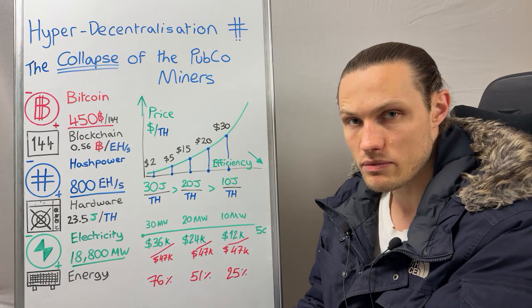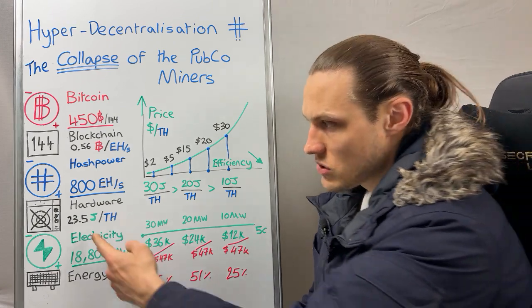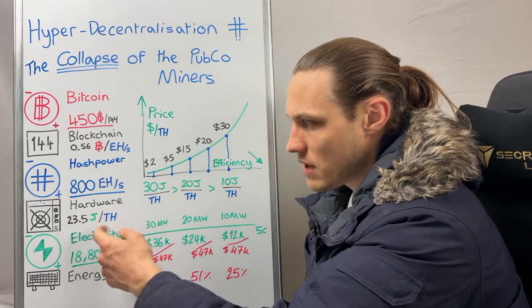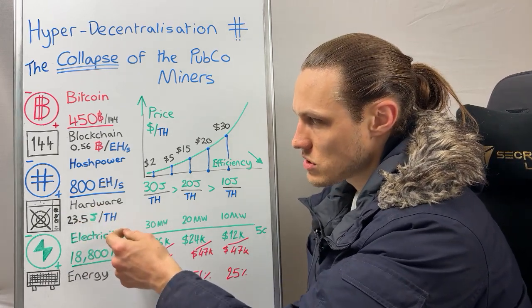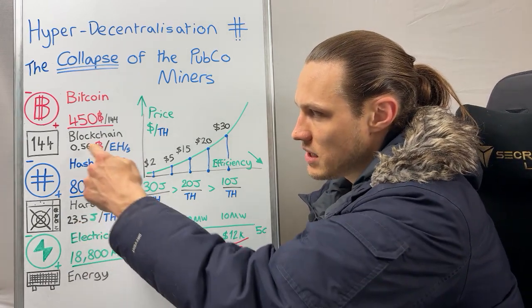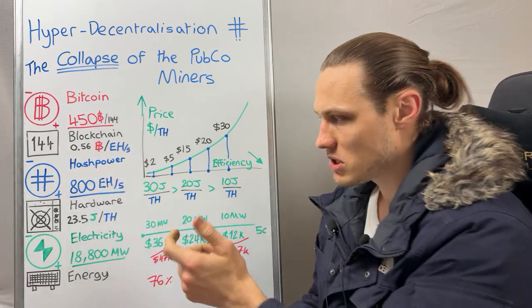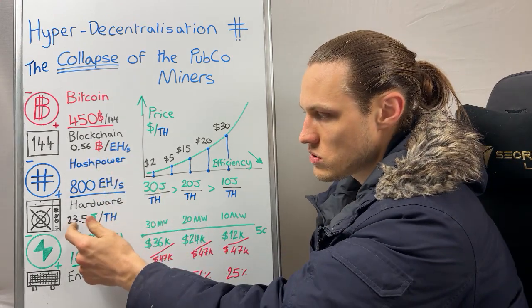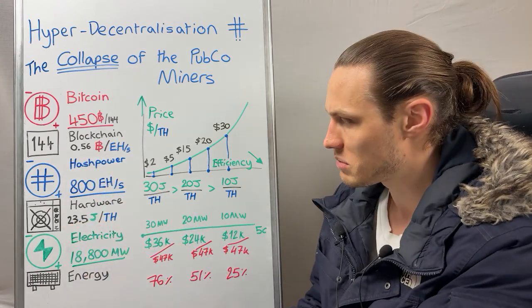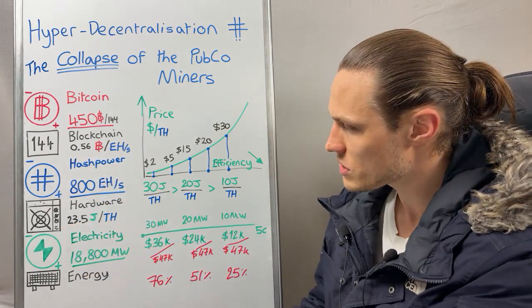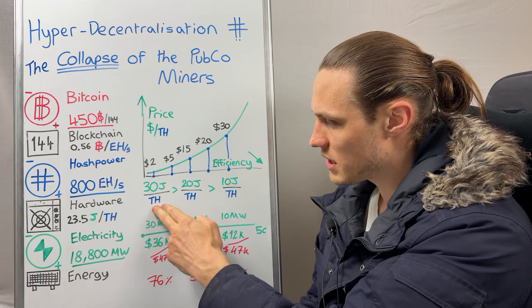It would be 23.5 megawatts per exahash — I have it in an exahash figure but you can use the same variable. So 30 joules per terahash is the same as saying 30 megawatts per exahash, and one exahash is making 0.56 Bitcoin.